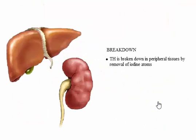Thyroid hormones are broken down by stepwise removal of iodine atoms in peripheral tissues, especially the liver and kidney.